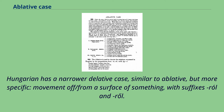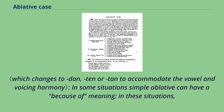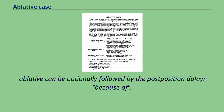The ablative in Azerbaijani is expressed through the suffixes -dan or -dən. The ablative in Turkish is expressed through the suffix -dan. In some situations, a simple ablative can have a 'because of' meaning; in these situations, the ablative can be optionally followed by the postposition dolayı, meaning 'because of.'